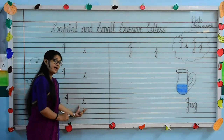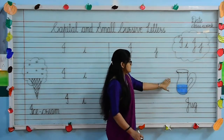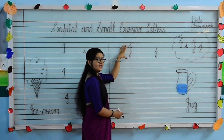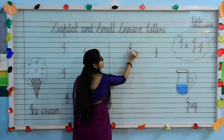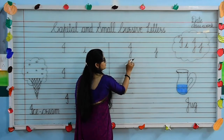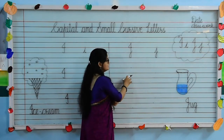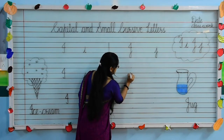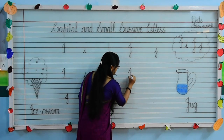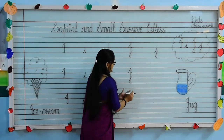Now we will move to our next letter — capital cursive J. See this picture. What is this? This is a jug. Capital cursive J: first we will draw a sleeping line from the second line, slanting line, touch the first line, and draw a long standing line towards the fourth line, then draw a small loop. So put your pencil on the second line, draw sleeping line, turn, slanting line, touch the first line, draw a standing line towards the fourth line and draw a small loop. This is your capital cursive J.